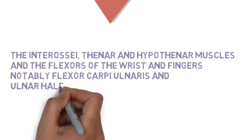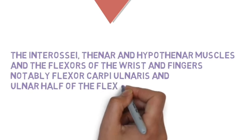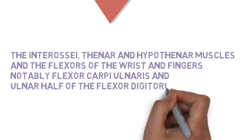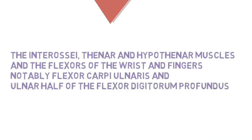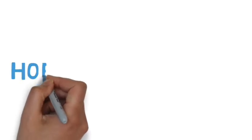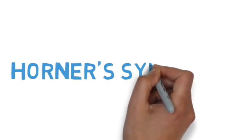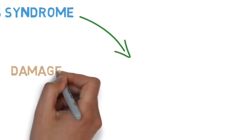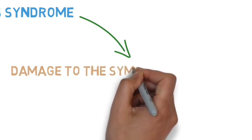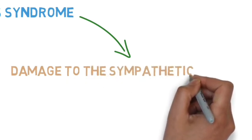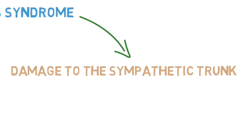Talking about Horner's syndrome, which is seen when there's damage to the sympathetic trunk. Horner's syndrome is characterized by three very important clinical features.